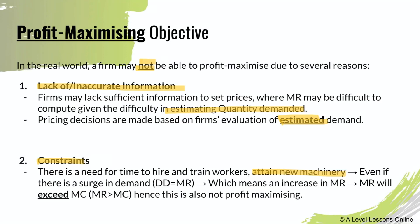Demand equals marginal revenue, so an increase in demand causes marginal revenue to exceed marginal cost — which means the firm is not profit maximizing. Profit maximization only occurs when MR equals MC. If additional revenue exceeds additional cost, there is an excess of goods being produced. Conversely, if marginal cost exceeds marginal revenue, you are also not maximizing profits. It must be the exact sweet spot where MR equals MC, which is why this objective is quite unattainable in the real world.